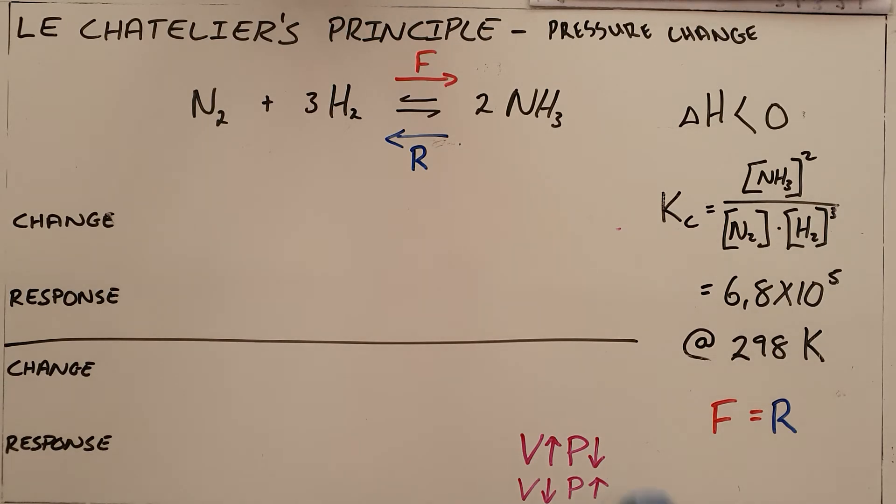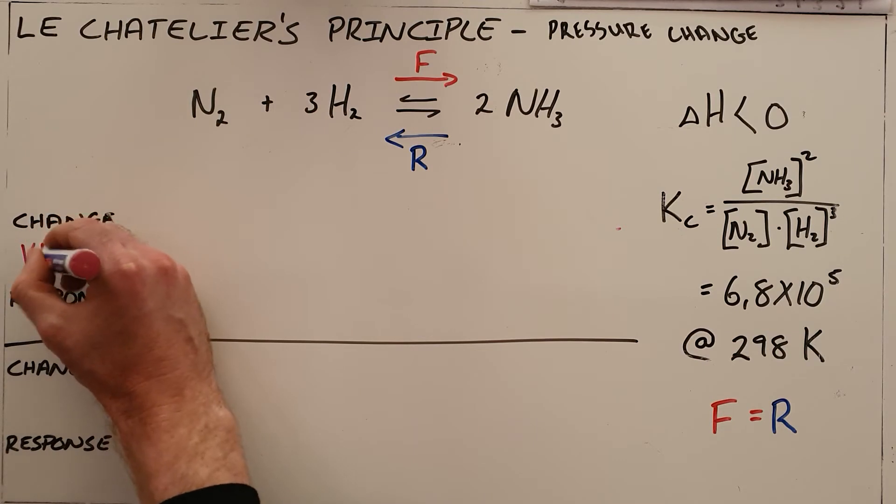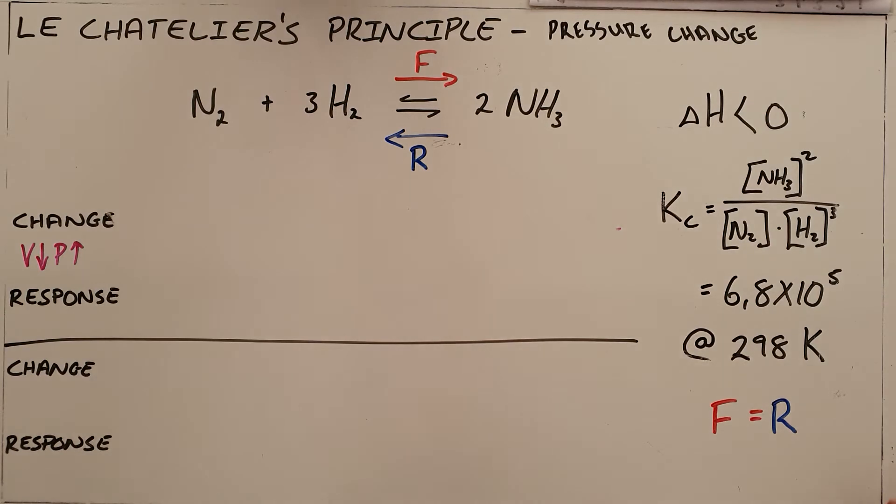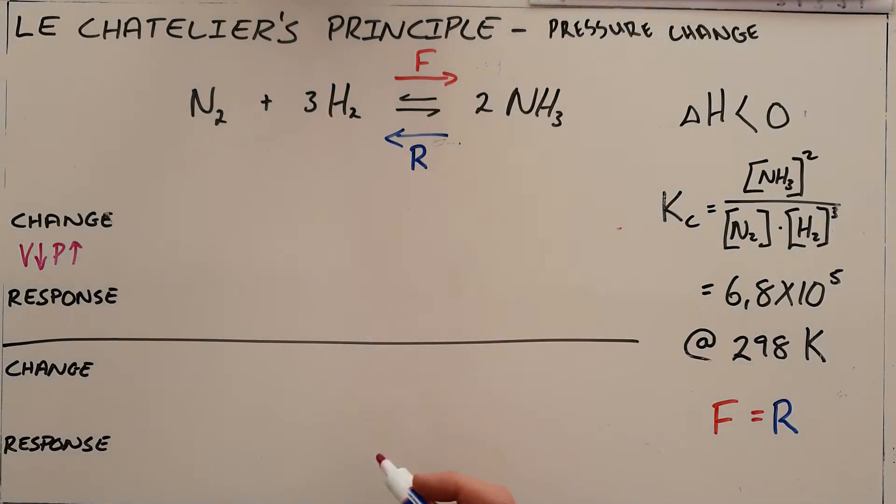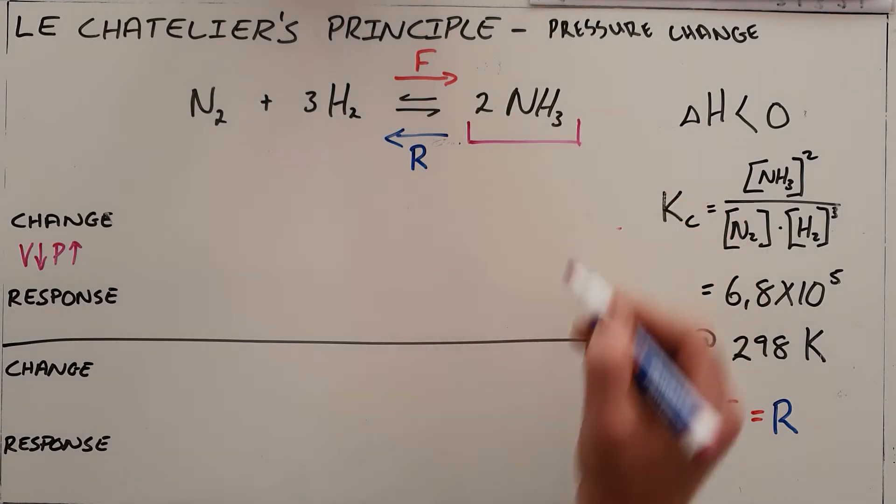So the first example that we are going to look at is what happens when the volume of a container is decreased. The change here is that we are decreasing the volume of a container, which automatically increases the pressure within that container. Now we know that when there is a bigger pressure and a smaller space for those particles, the reaction by Le Chatelier's principle tries to undo that change. And since there is less space, the reaction tries to favour the direction that produces less stuff.